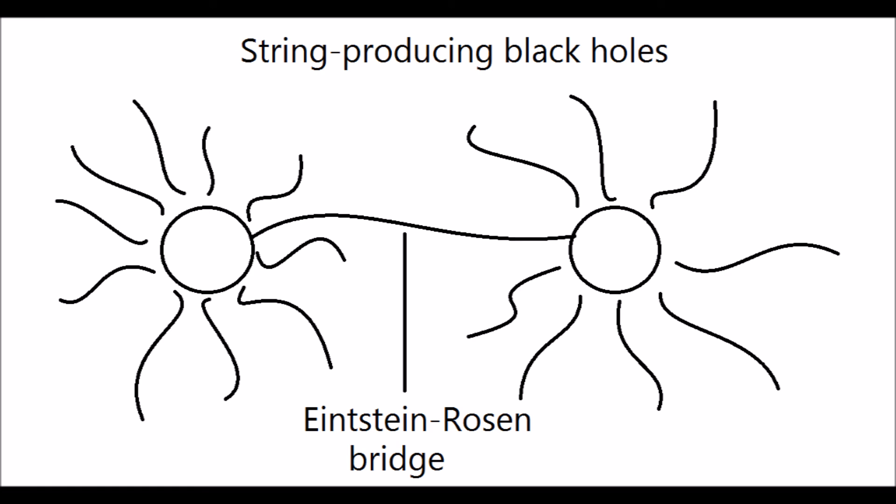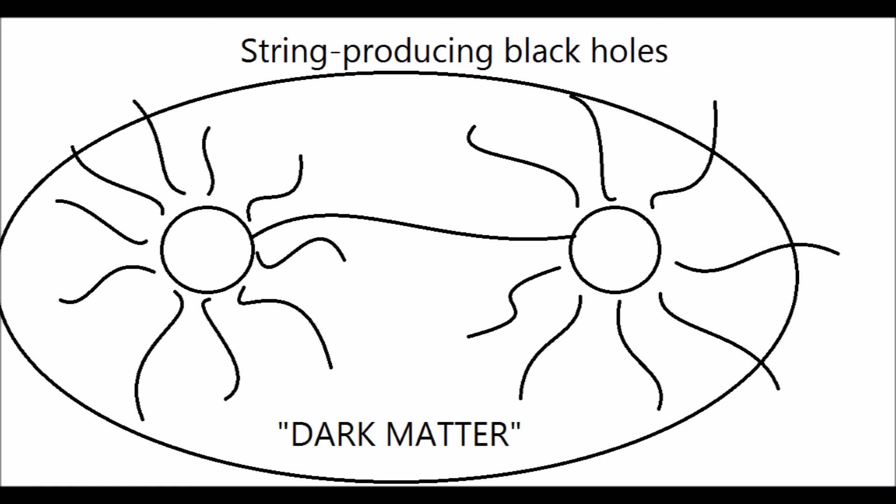The tension on the closed strings between the black holes curves the spacetime of the universe and is the source of the so-called dark matter gravity.